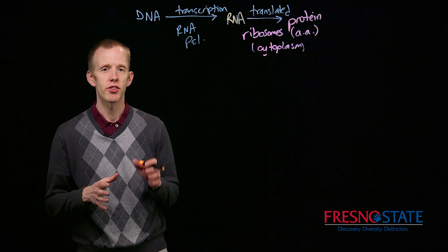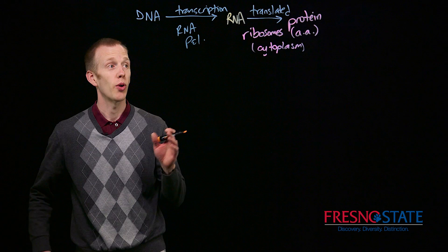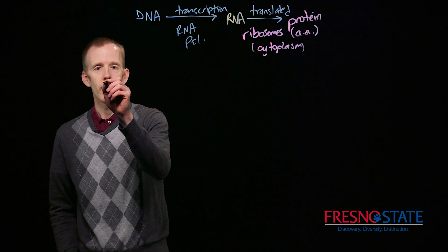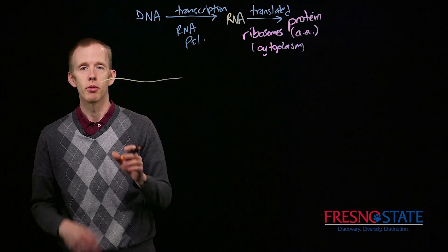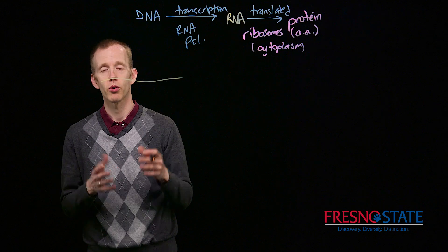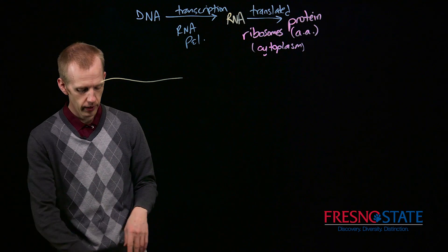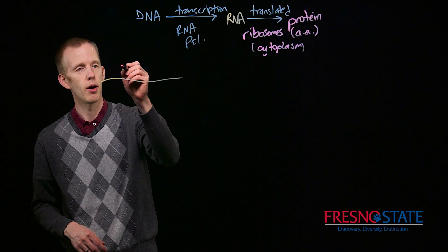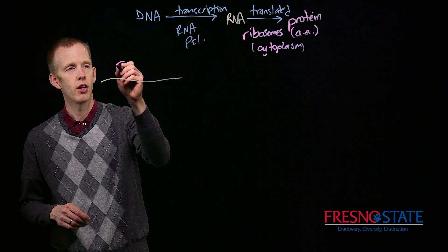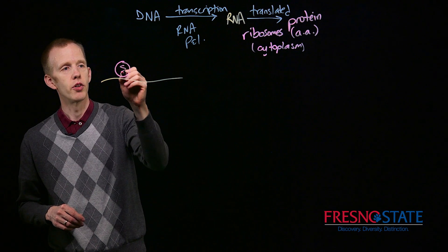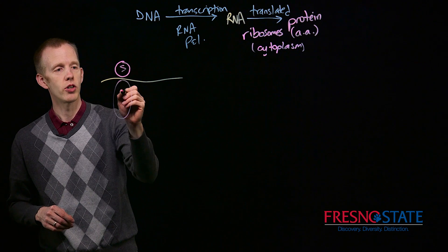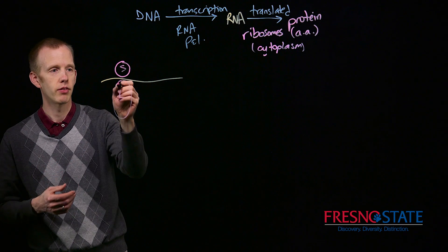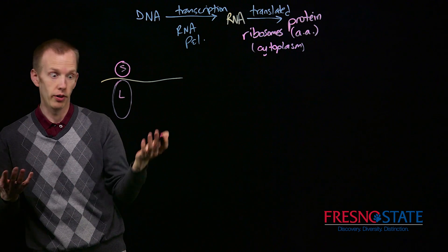So now we're going to talk about the final step in the central dogma, translation. That's the process of taking that single-stranded mature RNA molecule, prokaryotic or eukaryotic, and having the ribosome, which is a pair of proteins called the small subunit and the large subunit, which are often diagrammed as two different bubbles, a large one and small one.